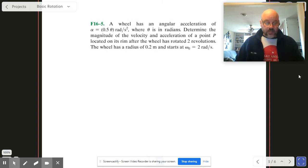OK, another one. A wheel has an angular acceleration of such and such. OK, so let's highlight that. That's clearly going to be important. Determine the magnitude and velocity acceleration of a point P located on the rim of the wheel after the wheel's gone around two times.